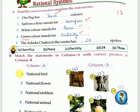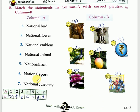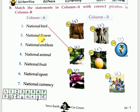First is national bird — all of you know our national bird is peacock. So the answer is C — peacock. Next is national flower. National flower is lotus — it is a sacred flower and has a special place in Indian culture. The answer is F — lotus.